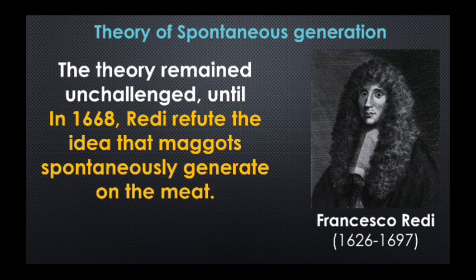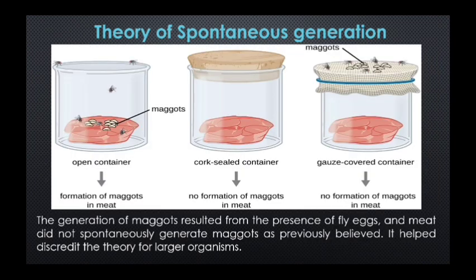Francesco Redi was the first person to challenge this theory and refute the idea that maggots spontaneously generate on meat. He demonstrated that maggots come from eggs of flies, not produced spontaneously. He placed meat in three containers: one was uncovered, one was tightly sealed, and the third was covered with a fine gauze that would exclude the flies. He predicted that preventing flies from having direct contact with the meat would prevent the appearance of maggots.